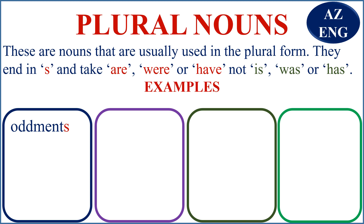We say, for example, 'oddments are', or in the past form, 'the oddments were', or 'the oddments have'. We do not say 'the oddments is', or 'the oddments was', or 'the oddments has'. That is why we call it a plural noun — oddments are, oddments were, or oddments have. Not oddments is, oddments was, or oddments has.